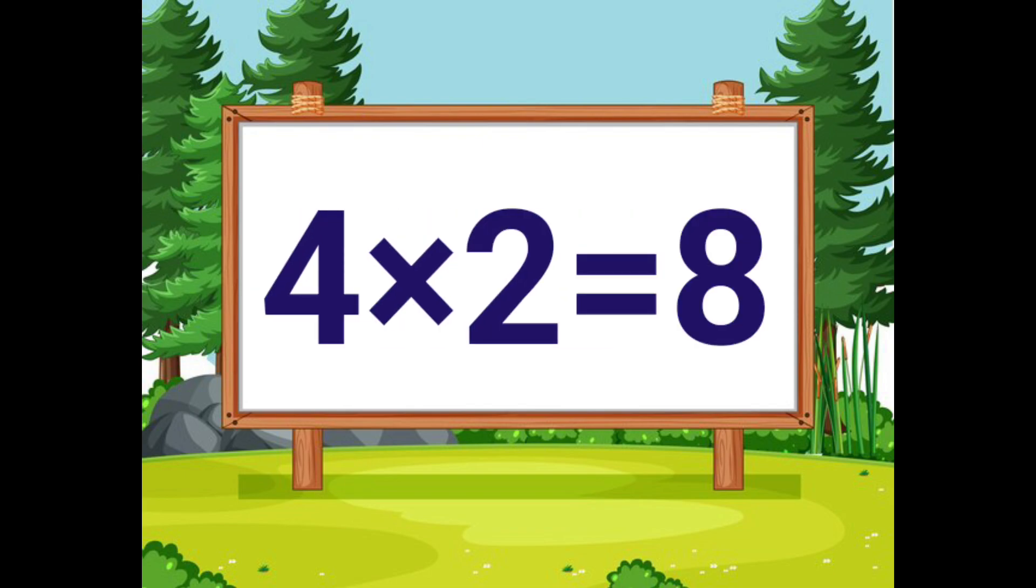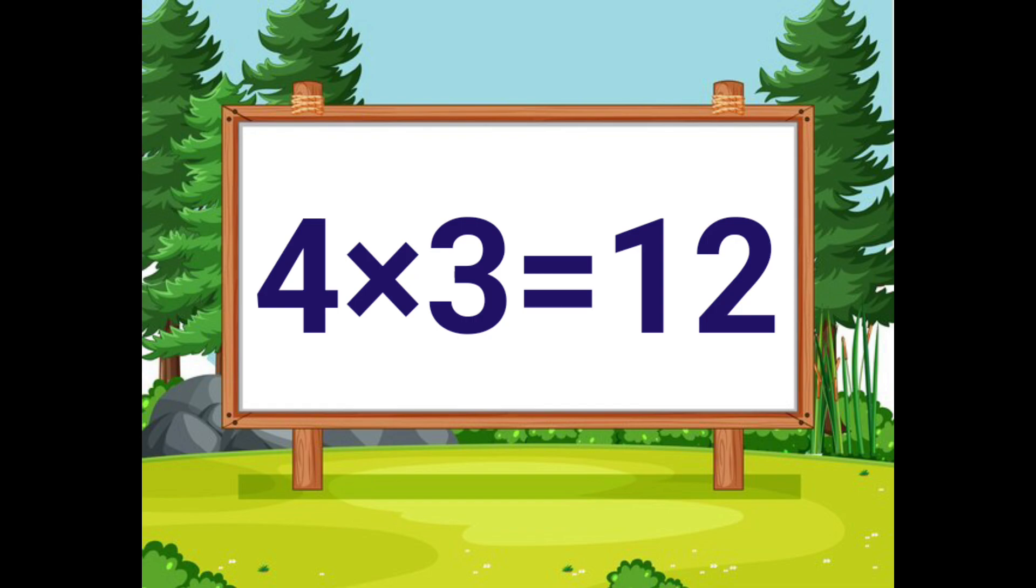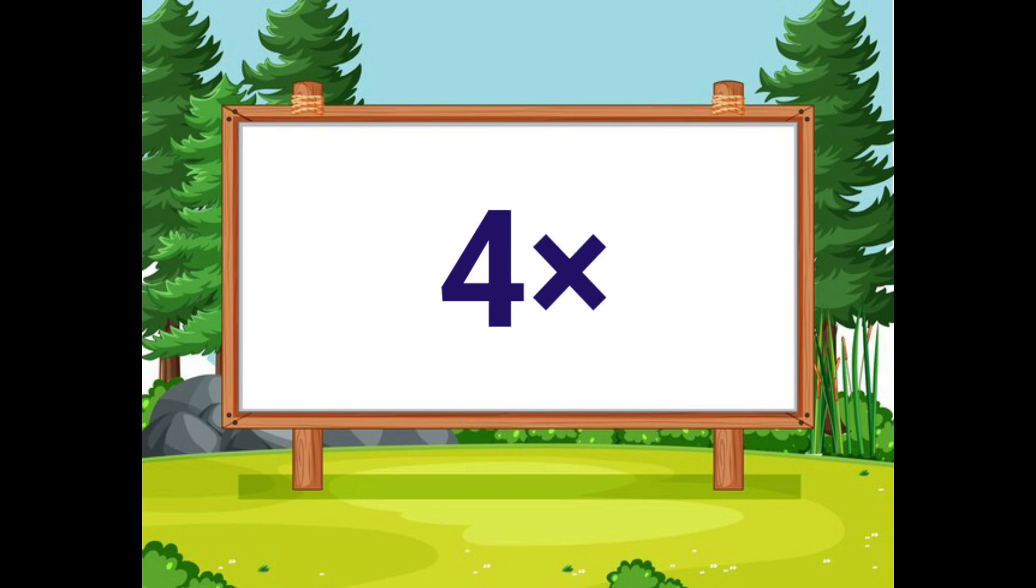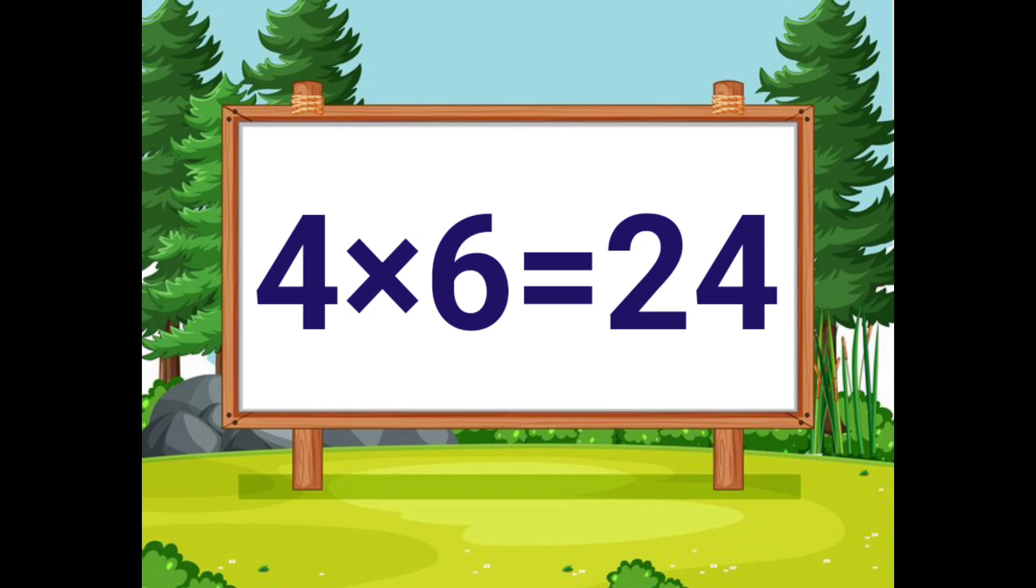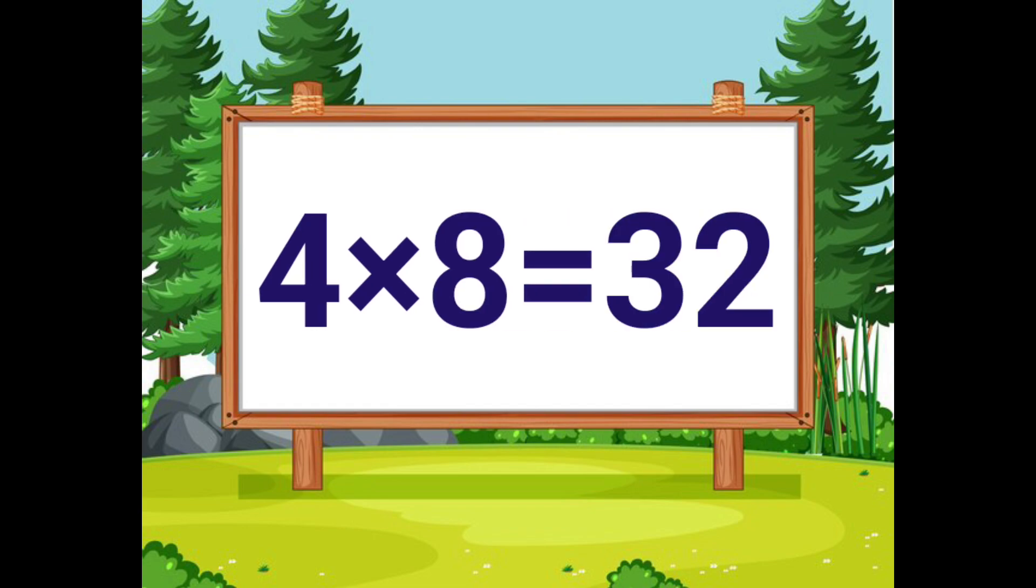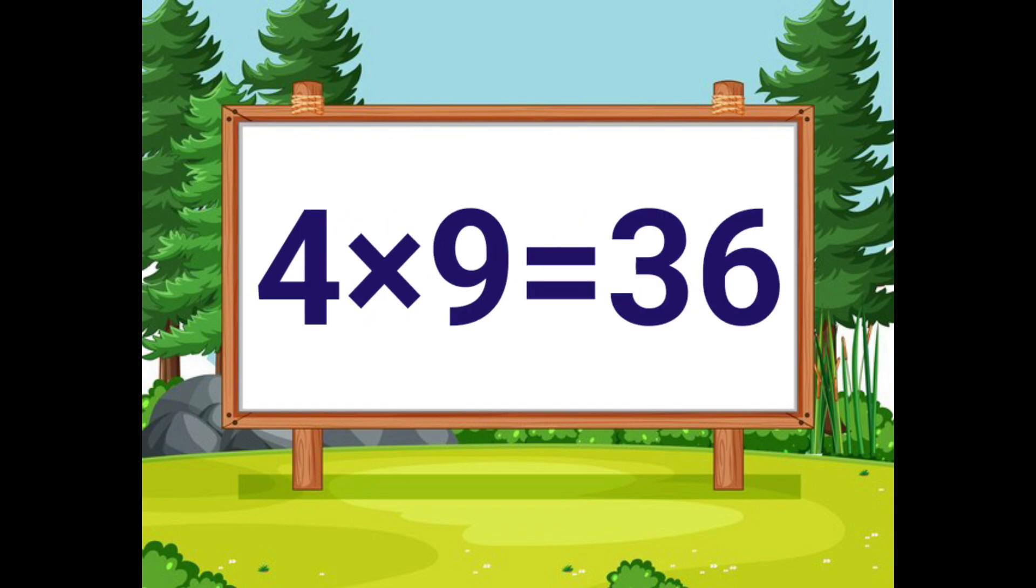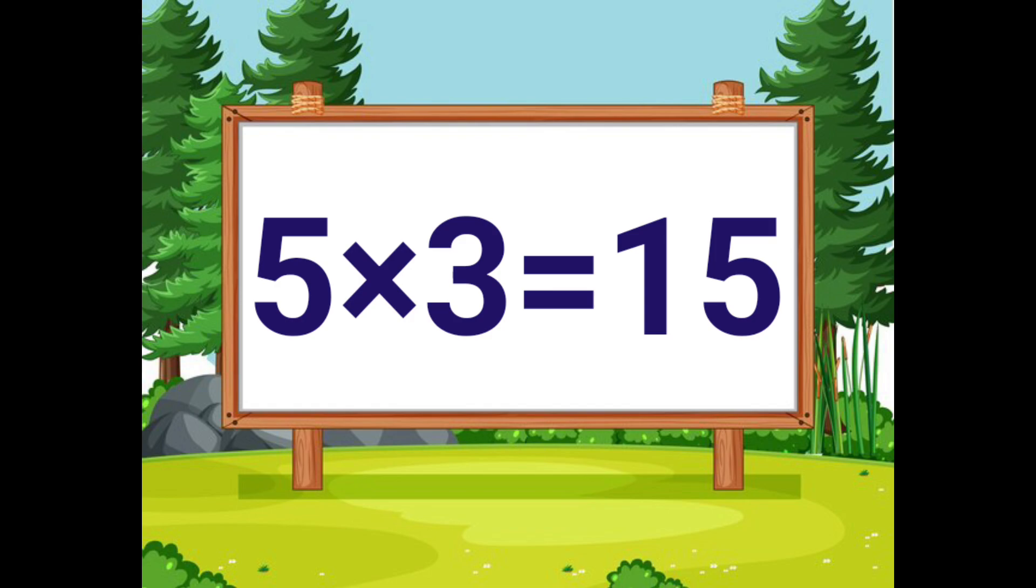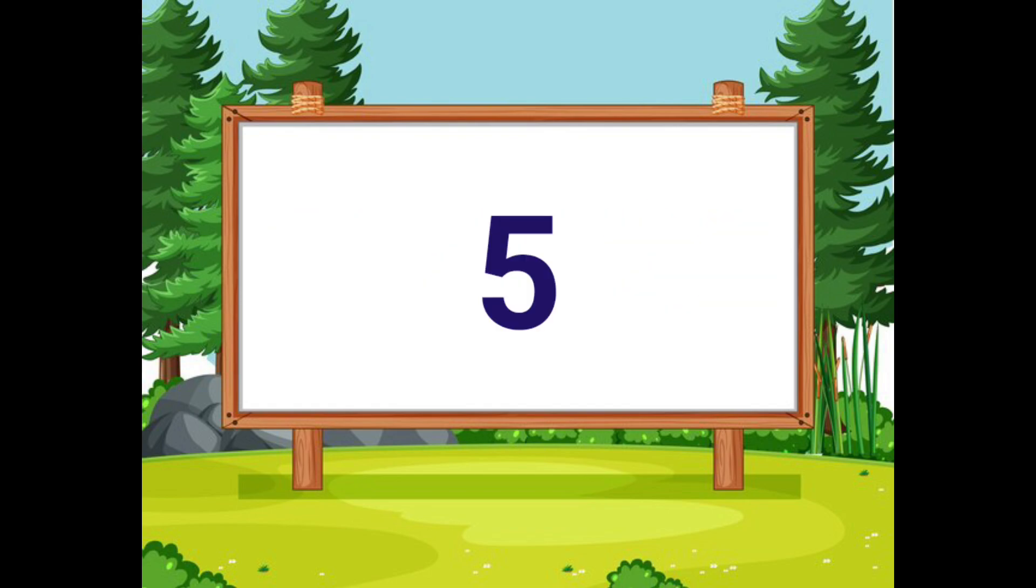Four times one is four, four times two is eight, four times three is twelve, four times four is sixteen, four times five is twenty, four times six is twenty-four, four times seven is twenty-eight, four times eight is thirty-two, four times nine is thirty-six, four times ten is forty.